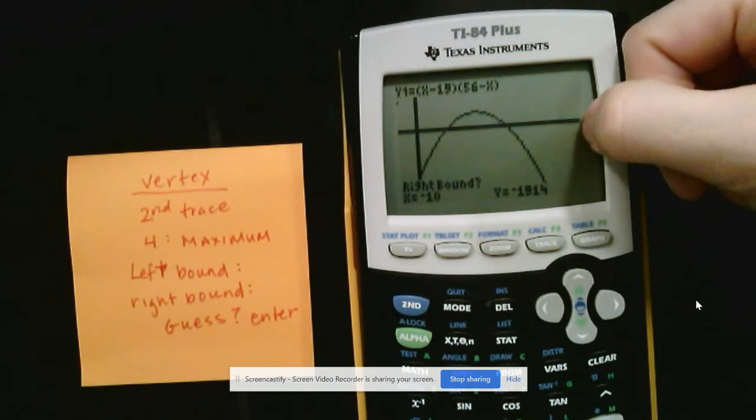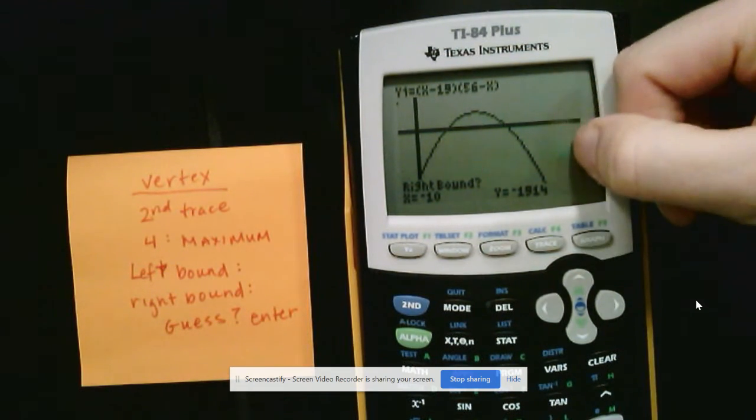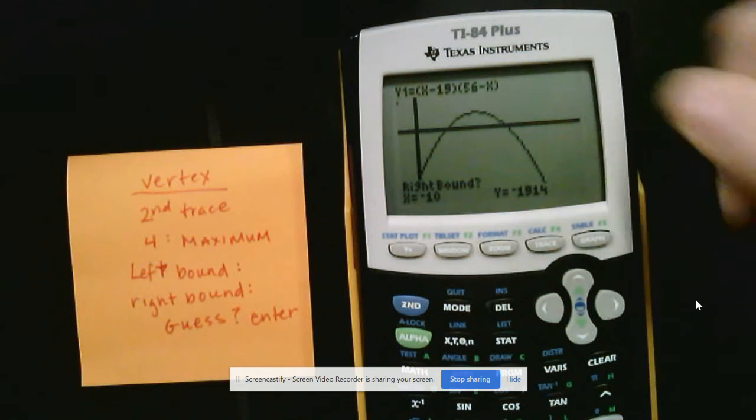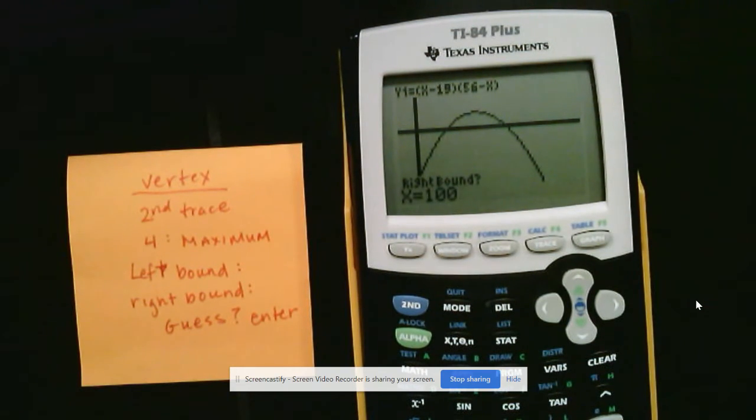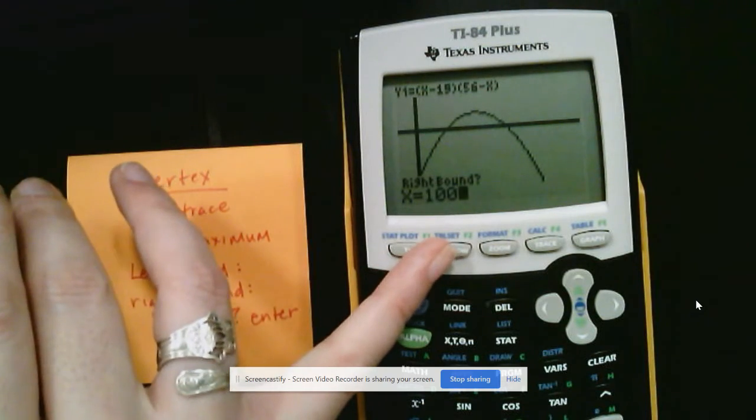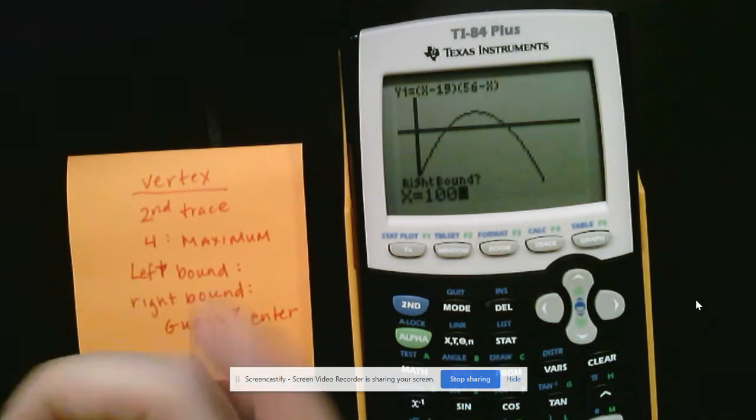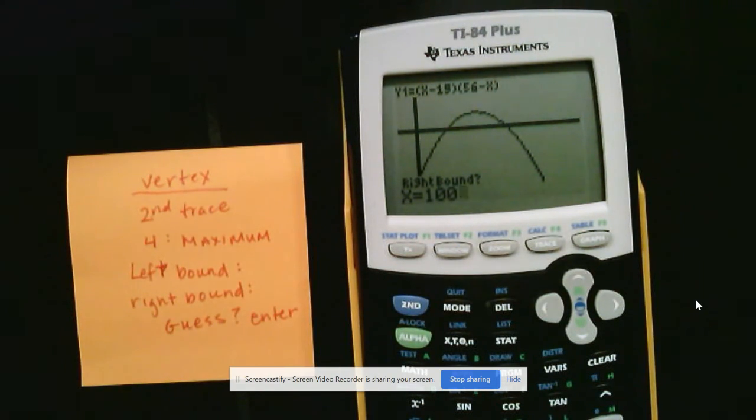Okay. And now for my right bound, as I mentioned, I'm going to use 100 because I know my screen goes all the way to 100. Now, I'm not recommending you use these numbers every time. I'm recommending that you look at your window to see what your X min and max are. And that could tell you you're left and right bound. So I'm going to press enter.